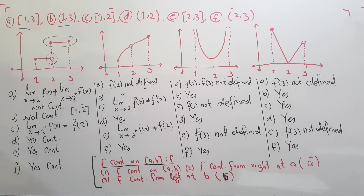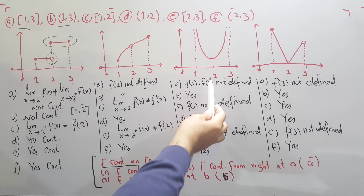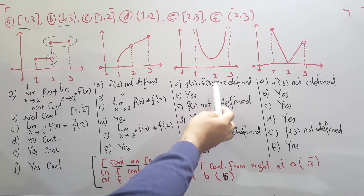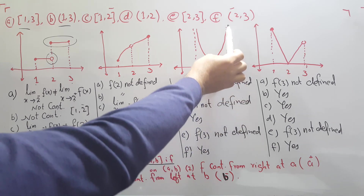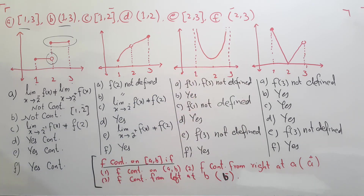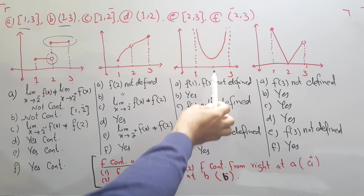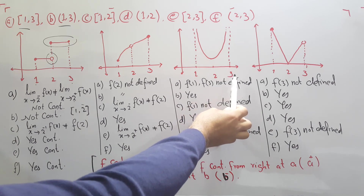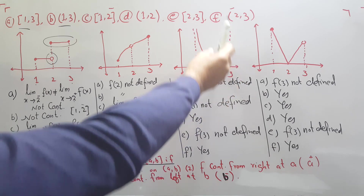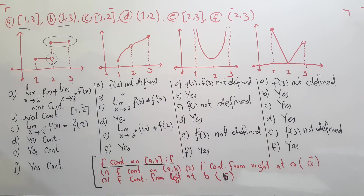For the closed interval [2, 3] on the third graph, the function is not defined at 3, so it is not continuous. In the open interval (2, 3), since 2 and 3 are not included, the function is defined and continuous.